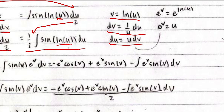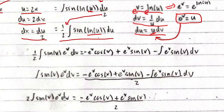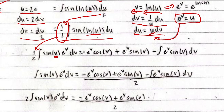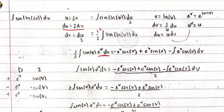Now apply a second substitution: let v = ln(u). Differentiating both sides gives dv = (1/u) du, so du = u dv. This is just another u-substitution — not integration by parts yet. Since u appears in the v-world, exponentiate both sides: u = e^v. Substituting in, we get one-half times the integral of sin(v) times e^v dv.